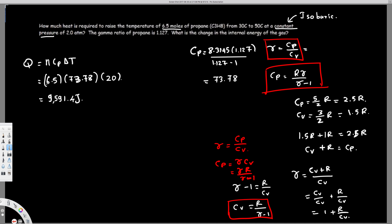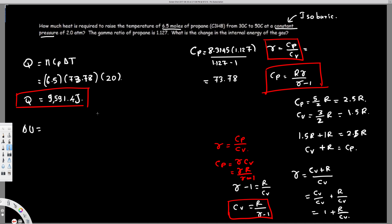Now let's look at the second question, which asks for the change in internal energy of the gas. We know delta U equals Q minus W, but we don't have W provided. So we use a different equation: delta U equals N times CV times delta T. This will always work. N is 6.5 moles.